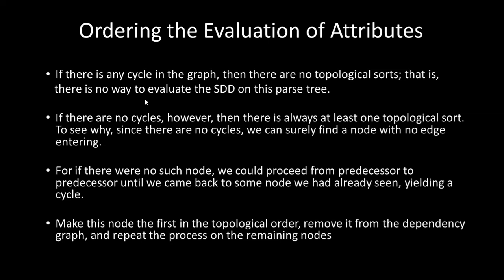If there is any cycle in the graph, then there are no topological sorts — meaning there is no way to evaluate the SDD on this parse tree. If there is a cycle we repeatedly move on that cycle and cannot find any valid order. However, if there is no cycle, then there is always at least one topological sort we can find from our dependency graph.